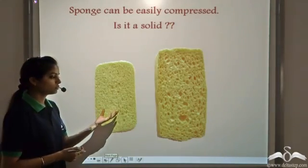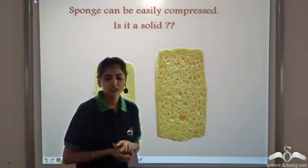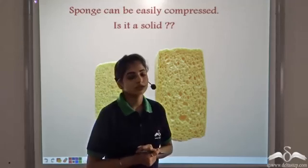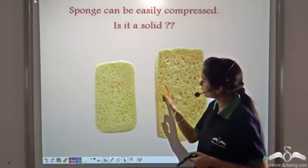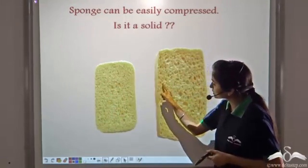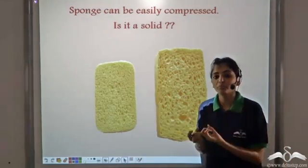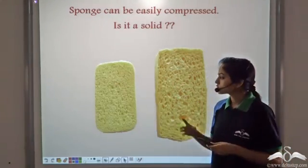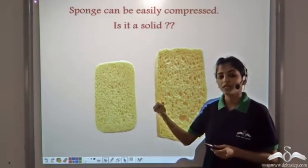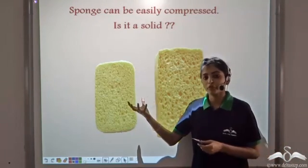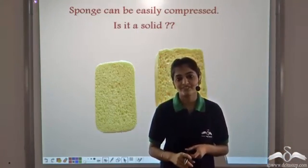You must have observed that a sponge can be easily compressed. Does that mean it is not a solid? No. If you observe, a sponge has small pores that trap air. When you compress it, the air is expelled. It is because of the expulsion of this trapped air that we can compress a sponge — and hence it is still a solid.